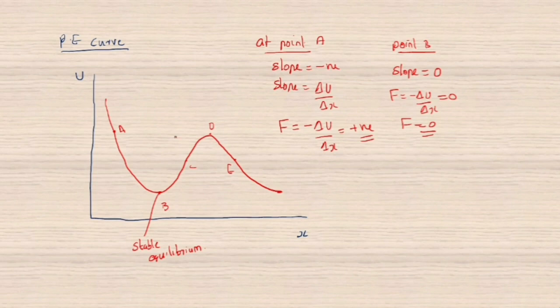Just imagine the object is at point B — think of this as a well-like structure. If the object is slightly pushed, it will go up but will definitely come back to point B itself. This is an example of stable equilibrium.